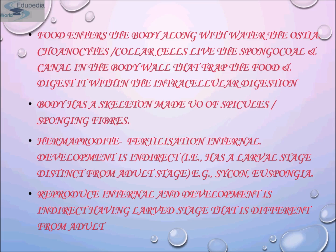In most sponges, the fertilized eggs develop into blastula, which is released into the water. In some species release takes place right after fertilization; in others it is delayed and some development takes place within the parent. The larvae may settle directly and transform into adult sponges, or they may be planktonic for a time. Adult sponges are generally sessile, attached to the substratum.